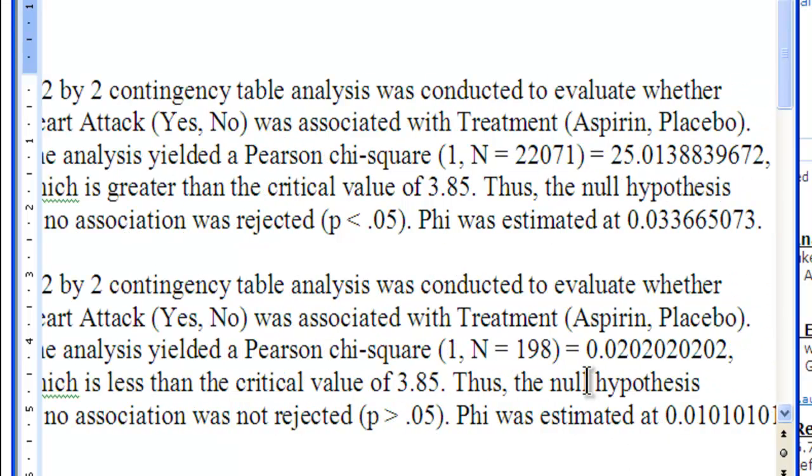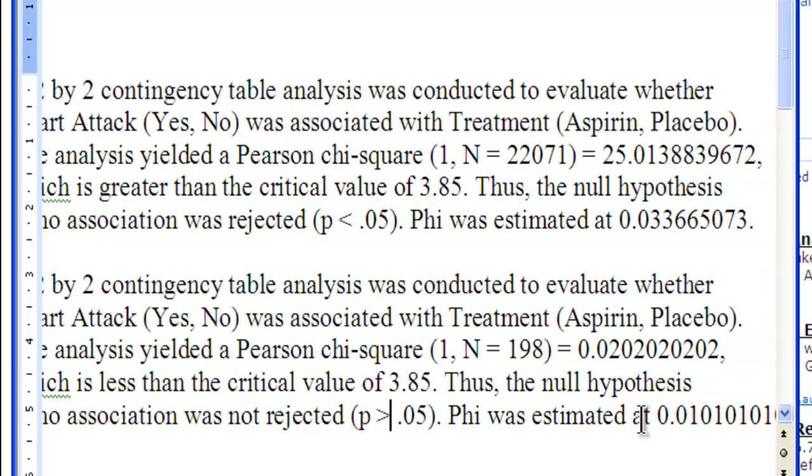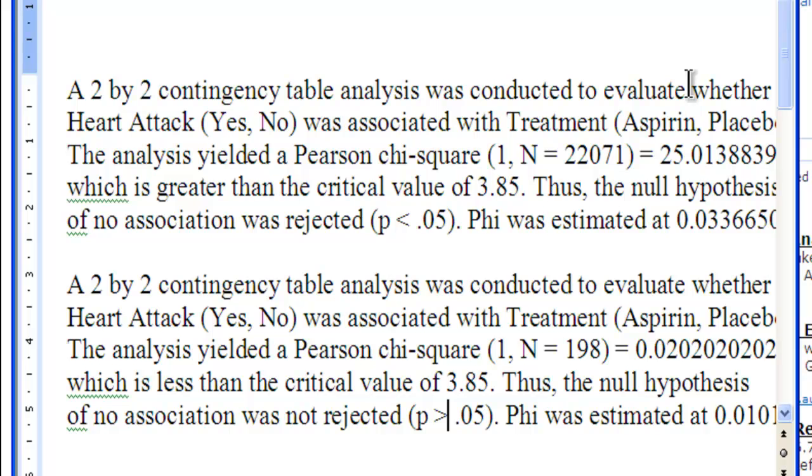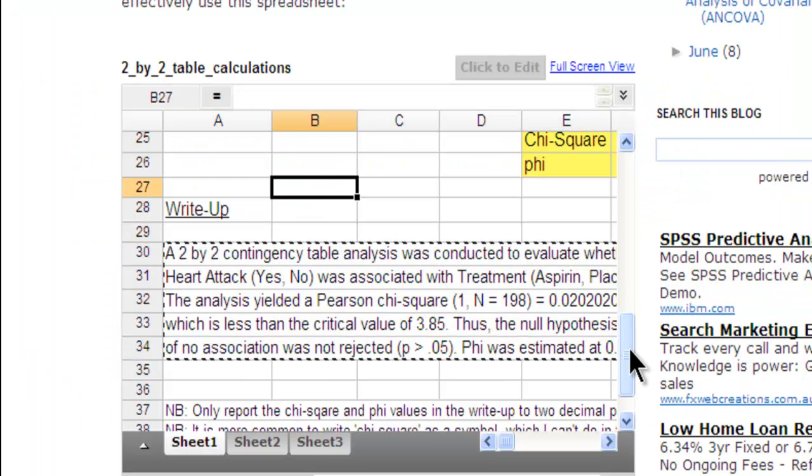And you can see that the chi-square value now has changed, and the hypothesis of no association was not rejected, p greater than 0.05. And then phi was estimated at something really small. So that's a little cool spreadsheet I created to help do calculations for a 2x2 table analysis.